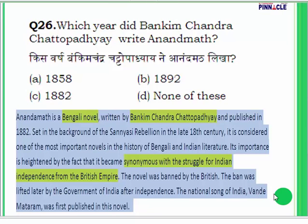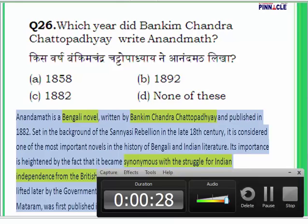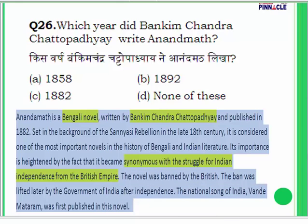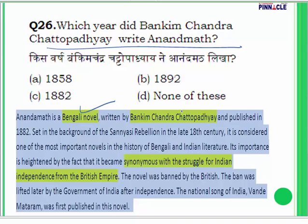Question 26: In which year did Bankim Chandra Chattopadhyay write Anand Math? He was a Bengali novelist. Anand Math is a Bengali novel written by him, published in the year 1882. It is set in the background of the Sanyasi Rebellion of the 18th century and is considered a very important book in the history of Bengali and Indian literature.